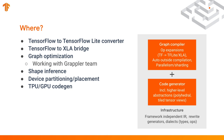I think of MLIR as three different parts. One, you have the graph compiler, which is like the op expansions, the lowering to TFLite, auto-outside compilation, parallelism, and sharding. Second is the code generator, which focuses on high-level abstractions for code generation — so polyhedral loop nests, tile tensor views, to that nature. Underlying all of this is the MLIR infrastructure: a framework-independent IR, rewrite generators like automatic pattern matchers, and the mechanisms to define dialects consisting of types and ops. That sort of ties all of this together.